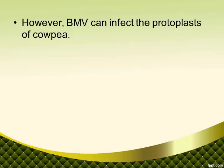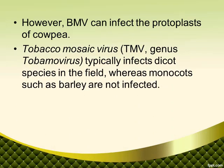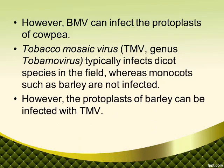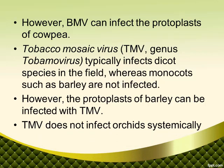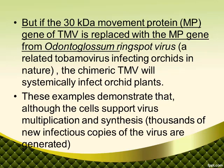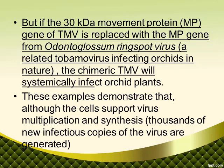However, brome mosaic virus can infect the protoplasts of cowpea. Tobacco mosaic virus typically infects dicot species in the field, whereas monocots such as barley are not infected; however, the protoplasts of barley can be infected with TMV. TMV does not infect orchids systemically, but if the 30 kilodalton movement protein gene of TMV is replaced with the MP gene from odontoglossum ringspot virus —